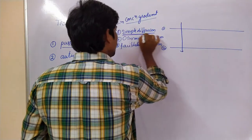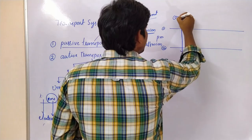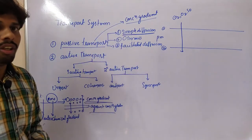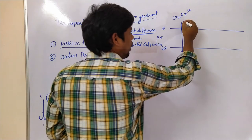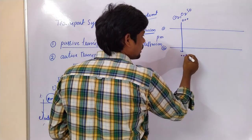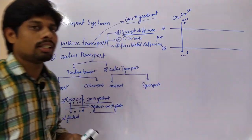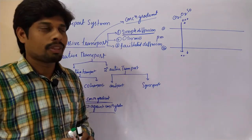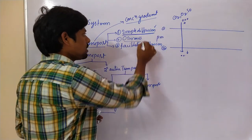In simple diffusion, carbon dioxide, oxygen, and other hydrophobic non-polar materials move from one side of the plasma membrane to the other — from higher concentration to lower concentration. That is simply called movement according to the concentration gradient. This is all about simple diffusion.